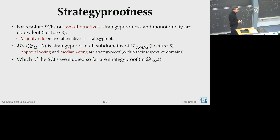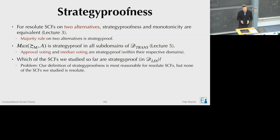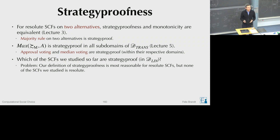Most majoritarian functions — top cycle, UC, Banks, TEQ, and bipartisan set — yield a single alternative if and only if there is a Condorcet winner; in all other cases there is more than one alternative. The problem is that our definition of strategy-proofness, which only compares singletons, is most reasonable for resolute functions. If a function always returns at least two alternatives, it is strategy-proof by definition because we cannot compare sets of alternatives to each other.